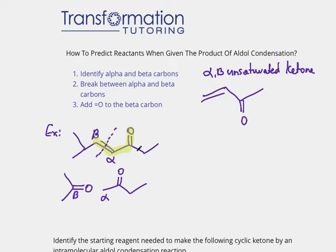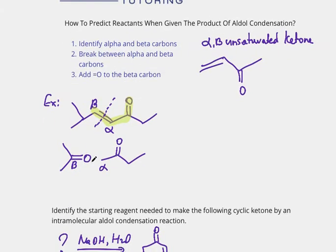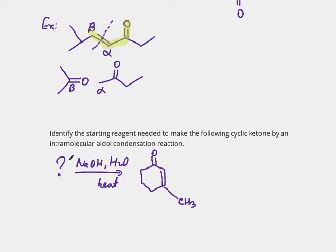Now let's do another aldol condensation example going backwards so we can practice a bit more. The problem says: identify the starting reagent needed to make the following cyclic ketone by an intramolecular aldol condensation reaction. I can see that my product is definitely a product of aldol condensation because I notice the double-single-double bond=O pattern. I just have to follow the same steps: find alpha and beta carbons.